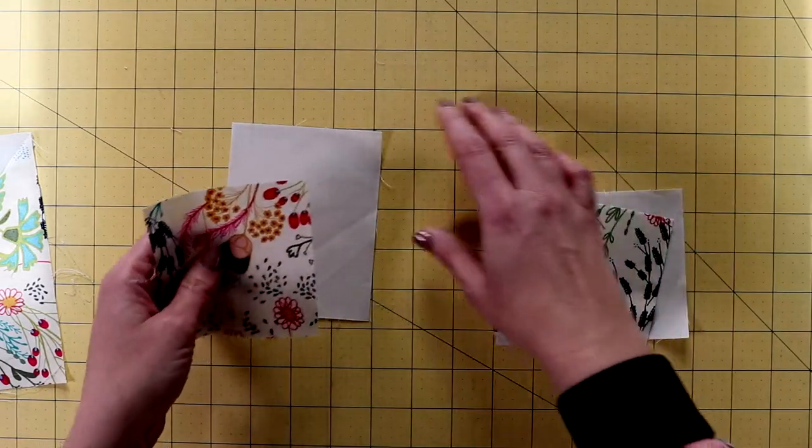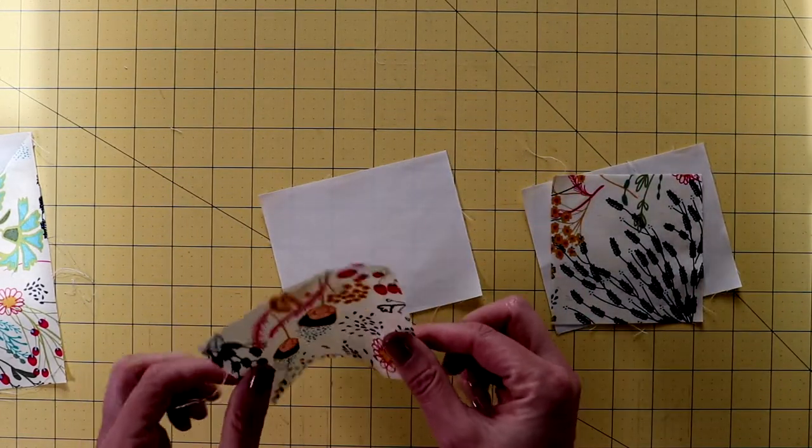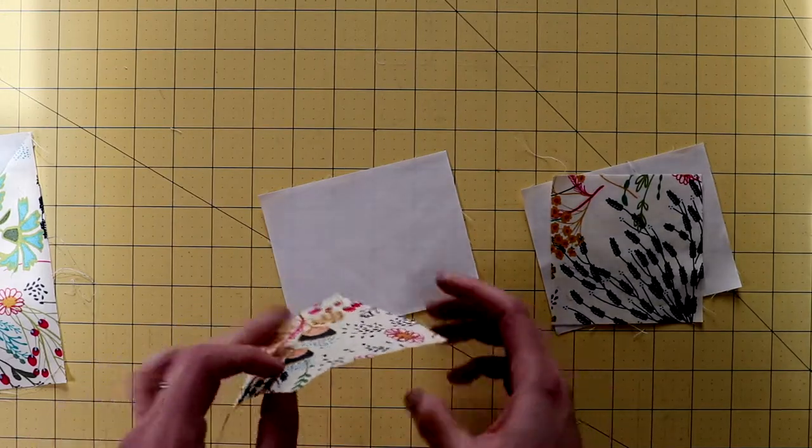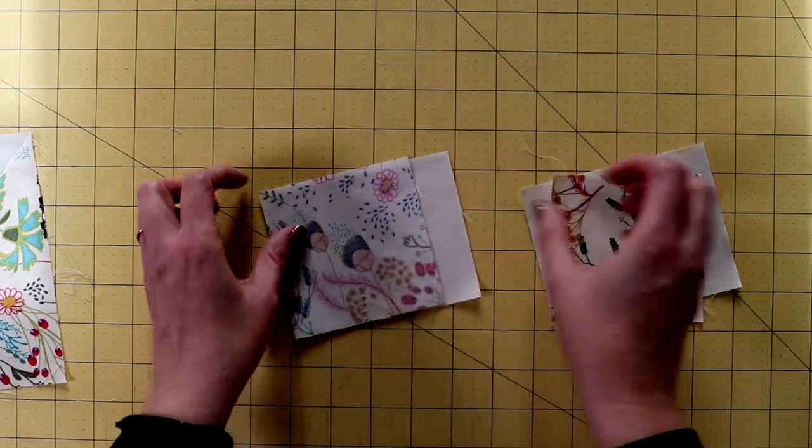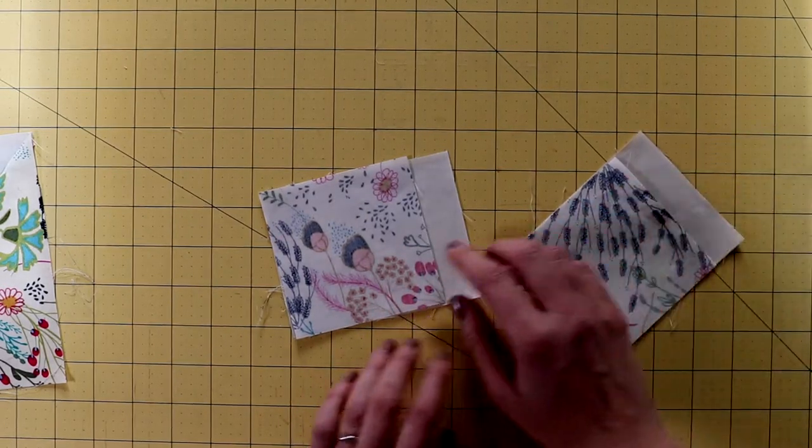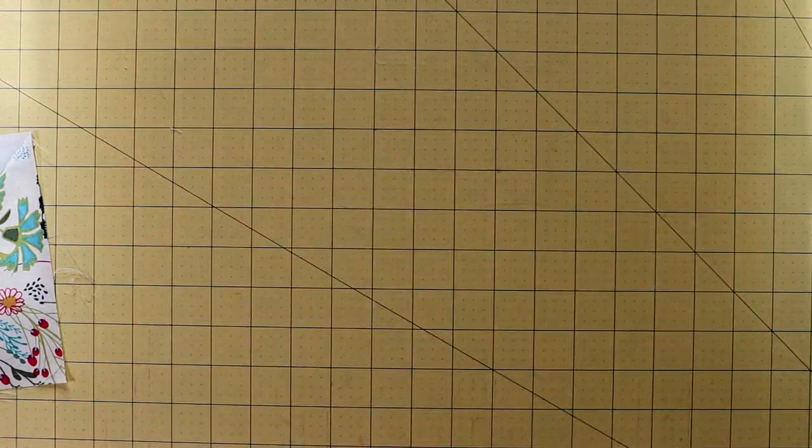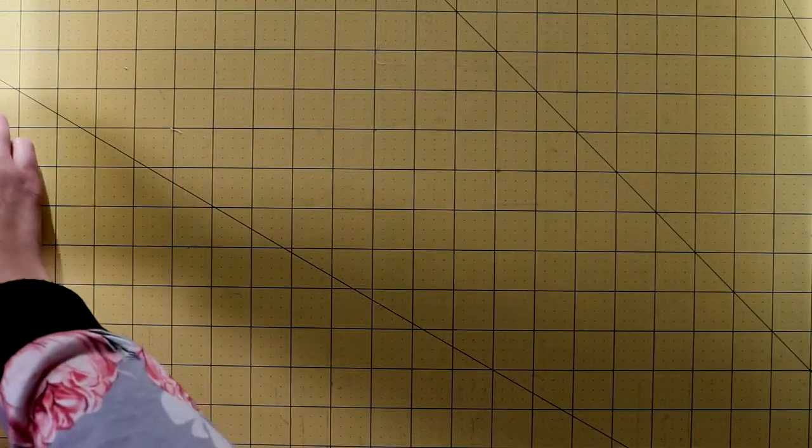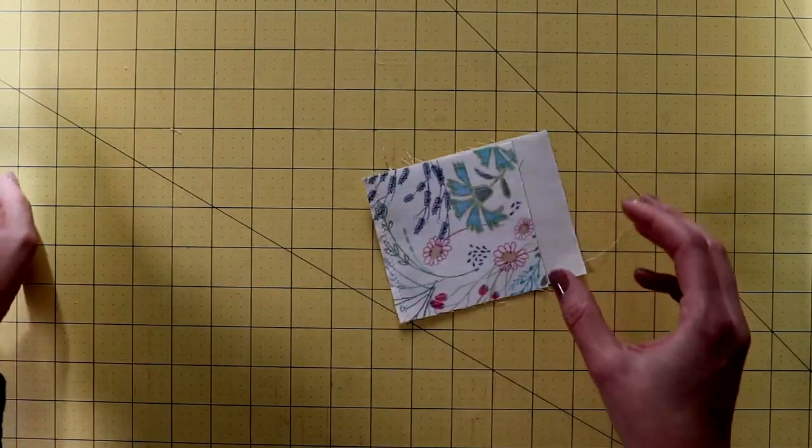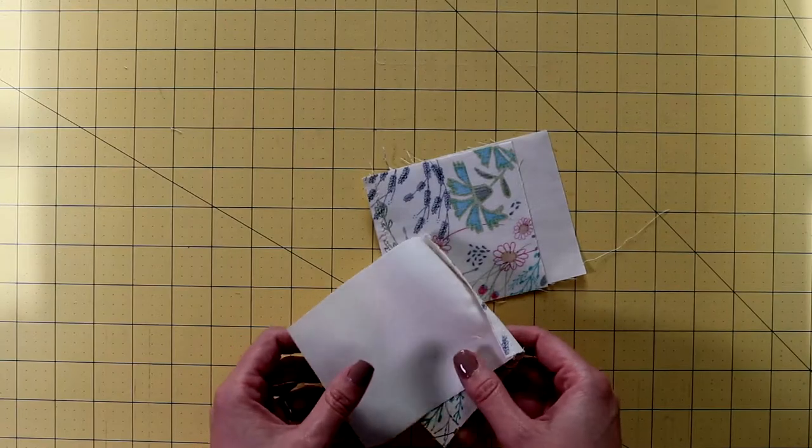The first step to sewing these pieces together is to take right sides together of the square, put on top of the rectangle, repeat with the other one, and then you're going to sew a ¼ inch seam on both of these. So I have already done that, sewing them together. And then you need to press the seams open.